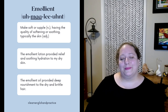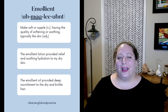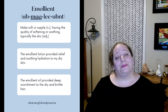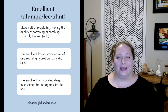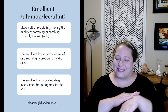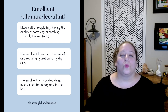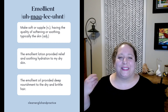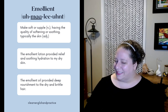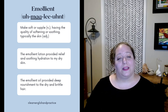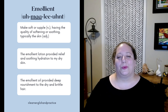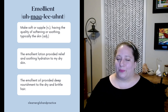Here's emollient. This means to make soft or supple as a noun, and having the quality of softening or soothing — typically the skin — as an adjective. You'll typically hear this in the context of balms or lotions or anything that really soothes the skin. But you can also think of words as an emollient for someone who is agitated — anything that has a calming and soothing effect. Examples: The emollient lotion provided relief and soothing hydration to my dry skin. The emollient oil provided deep nourishment to the dry and brittle hair.